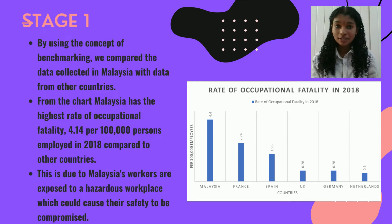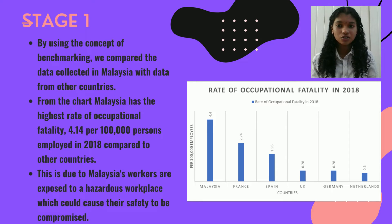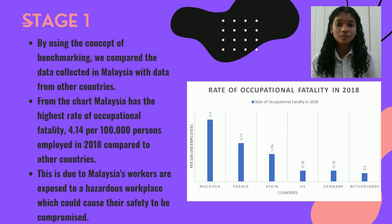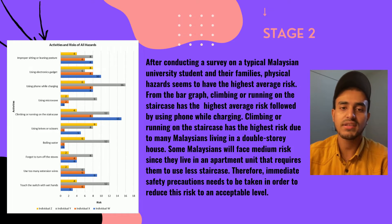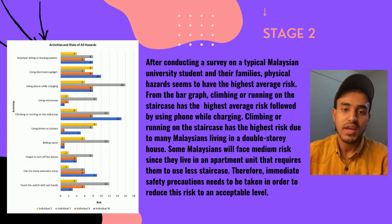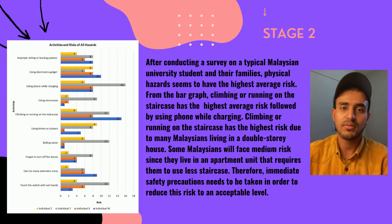In Stage 1, by using the concept of benchmarking, we compared the data collected in Malaysia with data from other countries. From the chart, Malaysia has the highest rate of occupational fatality, which is 4.14 per 100,000 workers in 2018 compared to other countries. This is due to Malaysian workers being exposed to hazardous workplaces which could compromise their safety. According to a survey conducted on a typical Malaysian university student and their families, physical hazards form the highest average risk, specifically climbing or running on staircases. Immediate safety precautions and measures need to be applied in order to reduce this risk to an acceptable level.